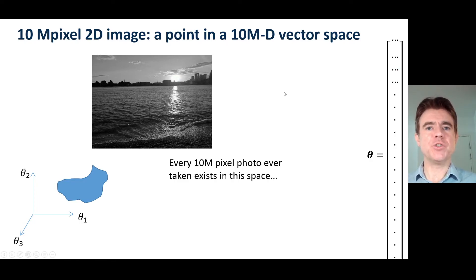That means every single 10 megapixel photo ever taken actually exists in a 10 million dimensional vector space. So here I've kept the axes just limited to 3 here, theta 1, theta 2, theta 3. You should indeed, of course, imagine 10 million such axes orthogonal to each other.